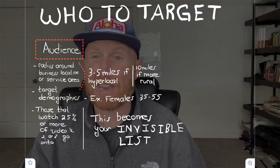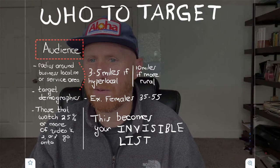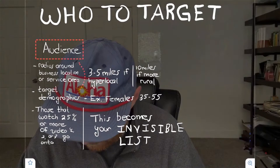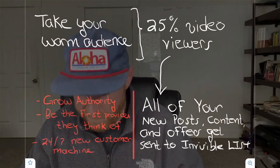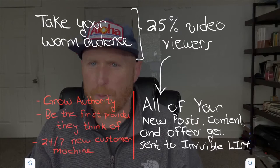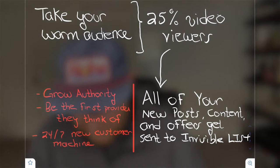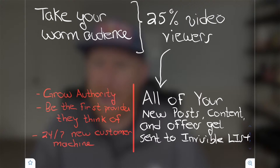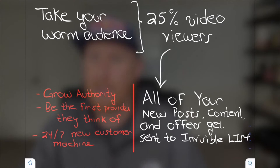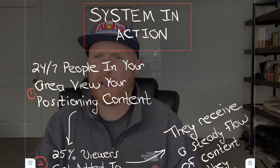As we show these videos to people in the area, the people that engage and actually watch the content are the people we want to share more content with — this invisible list becomes very, very valuable. Then you take your warm audience, your 25% video viewers, and all of your future content — your short form posts and content offers — goes to those people. This is going to grow your authority and allow you to be the first provider they think of when the problem arises or when they're ready to take action. Done right, this is a 24-7 new customer generating machine.